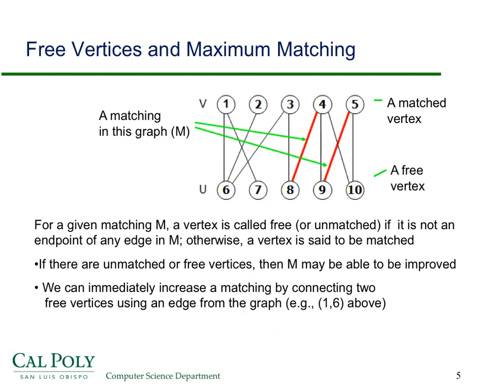Now, the maximum matching problem for a bipartite graph can be solved without using flow networks. But the solution, one thing to notice about the solution, which I'm just going to skim over, is that it has some similar characteristics to the solution using augmenting paths for flow networks.